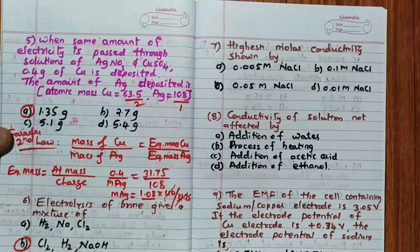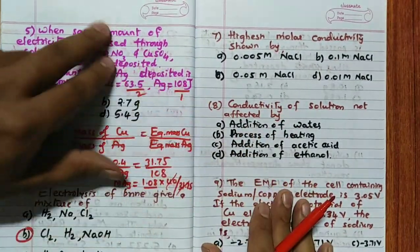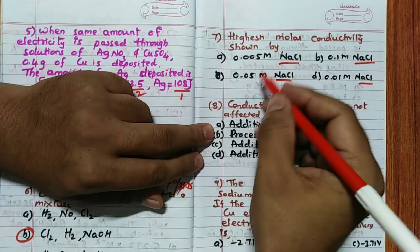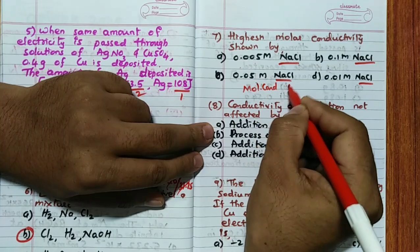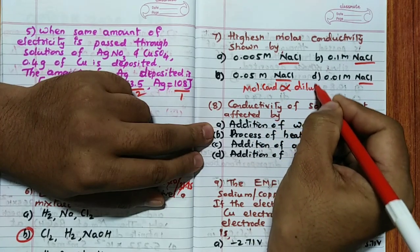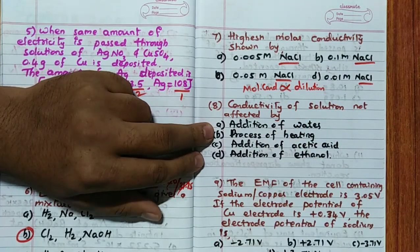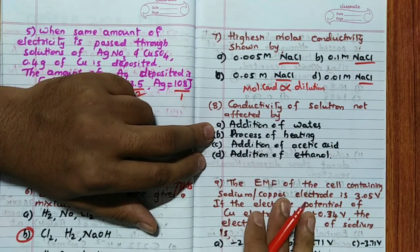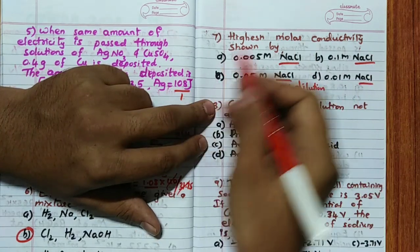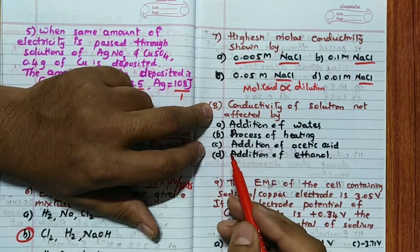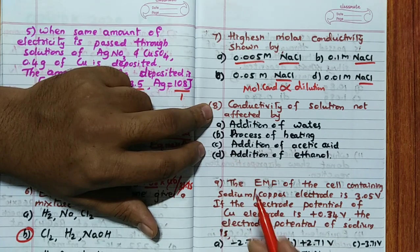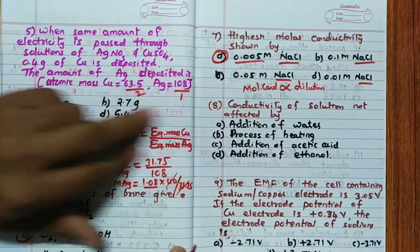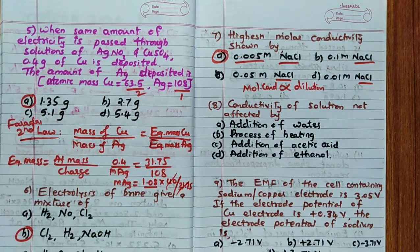The seventh question: highest molar conductivity among NaCl solutions of different concentrations. Molar conductivity is directly proportional to dilution — as dilution increases, molar conductivity increases. The most dilute solution is 0.005 M, which is the least concentrated. Therefore, the answer is option A.